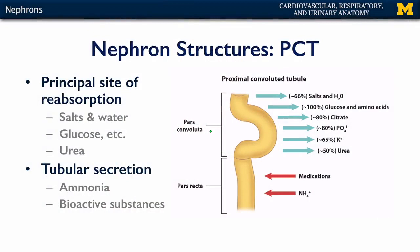From the corpuscle, filtrate travels along the proximal convoluted tubule, or PCT. The PCT is significant because it is the principal site of reabsorption in the nephron. In terms of total reabsorption: 66% of various ions and the salts and water they form are being reabsorbed there; 100% of glucose and amino acids — up to the renal threshold of glucose, which is about 160 to 180 milligrams per deciliter; and 80% of the citrate, phosphate, potassium, and urea. The lion's share of reabsorption happens in the proximal convoluted tubule.